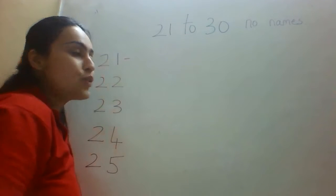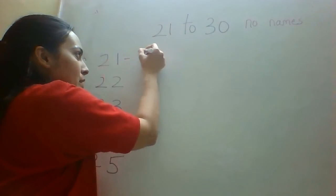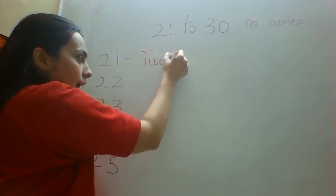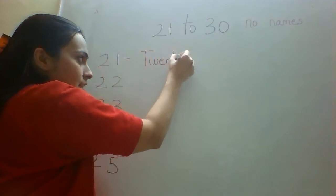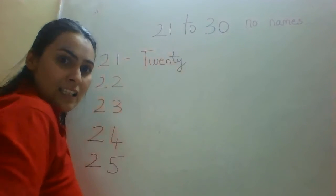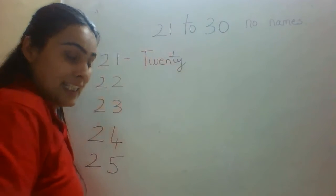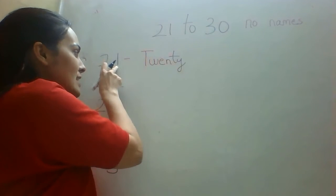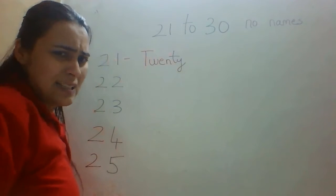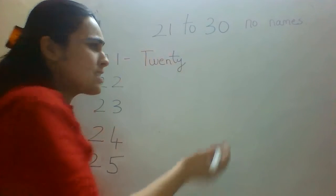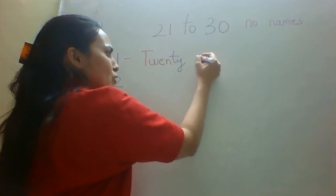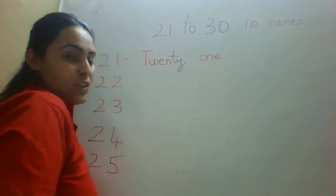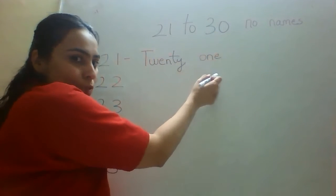The spelling of 20 is T-W-E-N-T-Y. This is 20. So 21 is twenty-one. And we all know the simple spelling of 1. What is the spelling of 1? O-N-E. So this is going to be twenty-one.